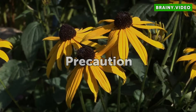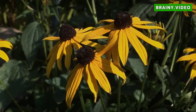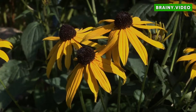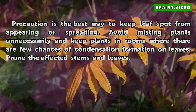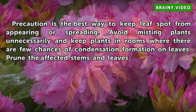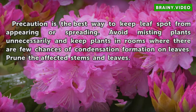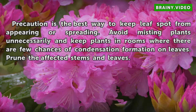Precaution is the best way to keep leaf spot from appearing or spreading. Avoid misting plants unnecessarily and keep plants in rooms where there are few chances of condensation formation on leaves. Prune the affected stems and leaves.